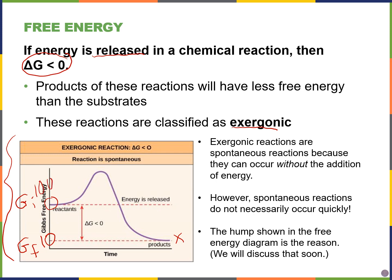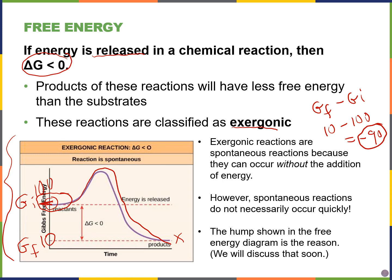Whenever you have a negative delta G, this is an exergonic reaction because energy has been released. I can see on the graph that I have a high energy value for my reactants, some kind of reaction occurs over time, energy is released, and I end up with low energy at the end of the reaction.